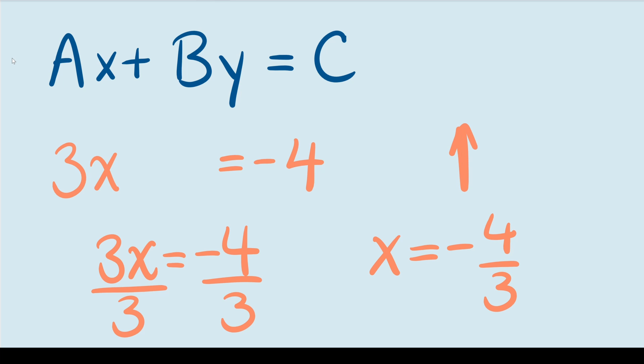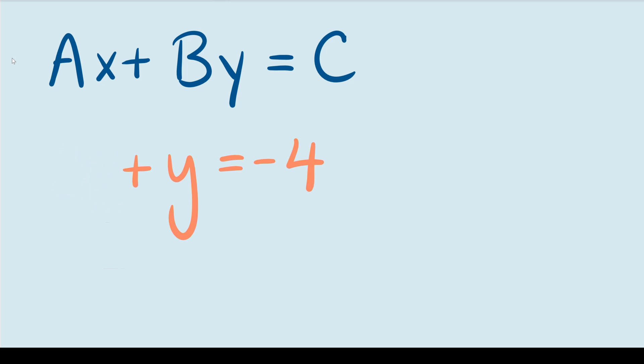And in ordered pair form, it would be negative 4 thirds comma zero. Now let's find the y intercept. To do that, all I need to do is plug in zero for x. And if I do that, it gets rid of this whole term, leaving me with y equals negative 4. So that automatically gives me my y intercept. In ordered pair form, that's going to look something like this, zero negative 4. That's the y intercept.